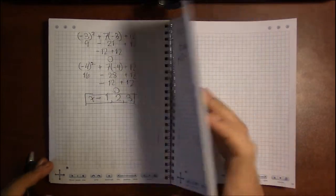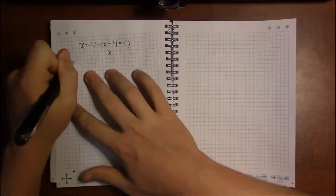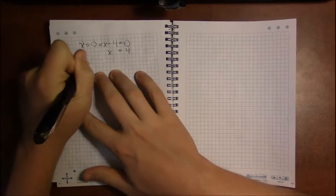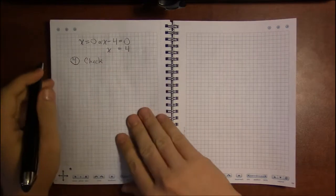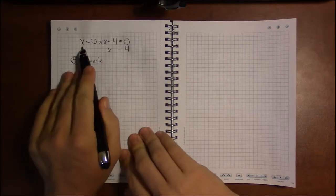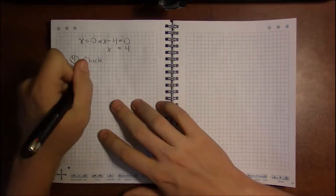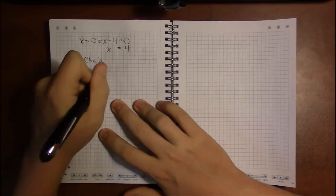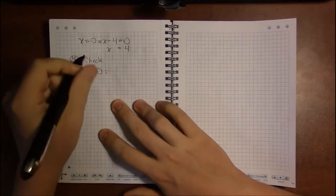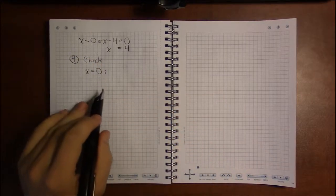But checking, we're on step 4, but we need to check. So we're going to stick each value of x back into the original problem and see if they work. If they do, they're actual solutions. If not, they're what we call extraneous solutions.